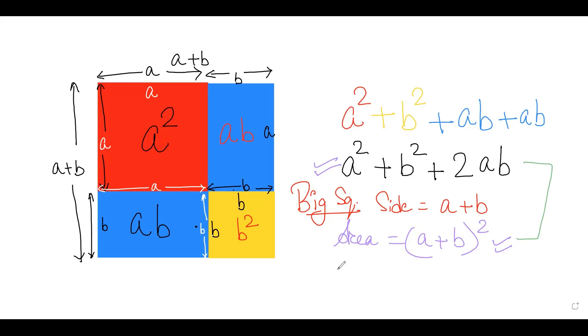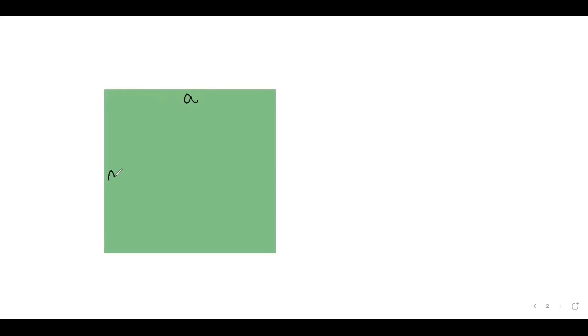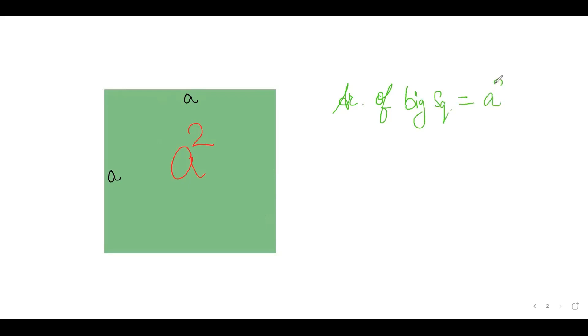Now we move to the second identity: (a-b)². To visualize this, we take a bigger green square with side a, so the area of this big green square is a².